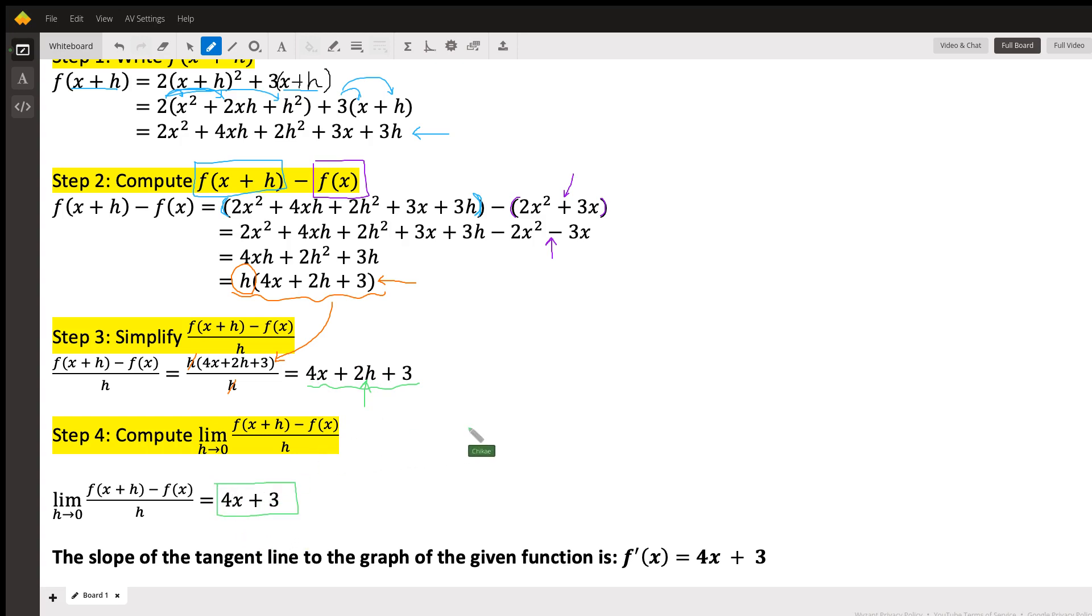So what that means is that the slope of the tangent line to the graph of the given function is f'(x) = 4x + 3. I don't know if you've learned this notation yet, but that just means that that just denotes the slope of the tangent line. All right, hope this was helpful. Please let me know if you'd like more sessions to work on your calculus.